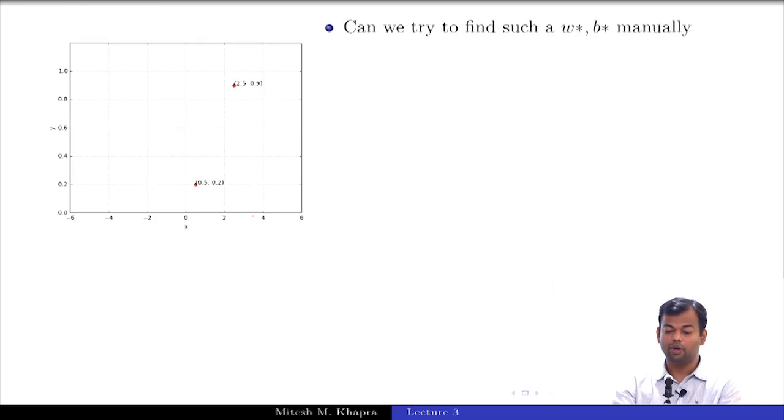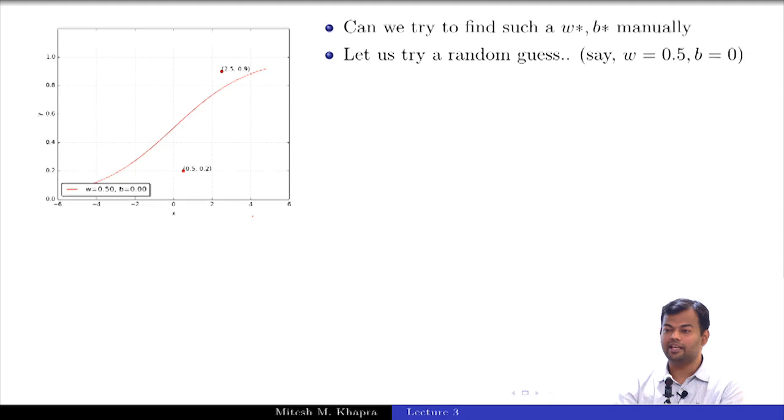So let us see this in more detail and now what we will do is our quest is for this w star and b star and we will try to find this manually. I will do some random guesswork and try to find this because I do not have any clear principle algorithm for finding it as of now. So I will just use some guesswork. So I will give my initial guesswork as w equal to 0.5, b equal to 0 for no reason, I just picked up some values and this is the function that I got. What does this mean this function? An error. So the sigmoid formula should be here, we should have the sigmoid formula here.